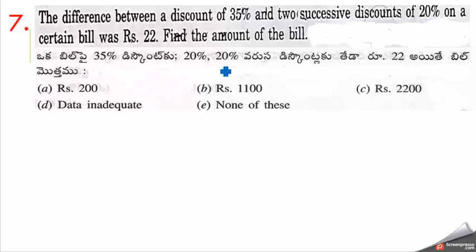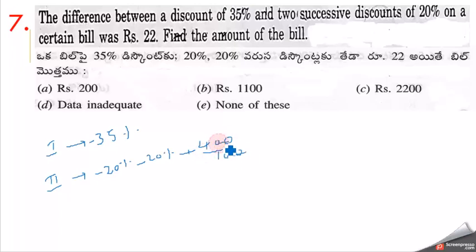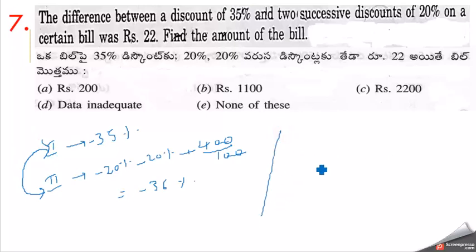The bill has a 35% single discount versus two successive 20% discounts. Using the formula for successive discounts: minus 20 plus minus 20 plus (20 into 20) by 100 equals minus 40 plus 4 equals minus 36%. So the single equivalent discount is 36%. The difference between 35% and 36% is 1%.